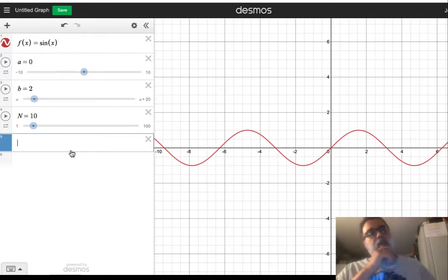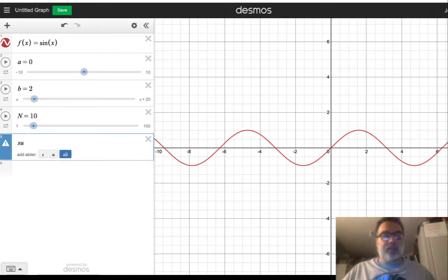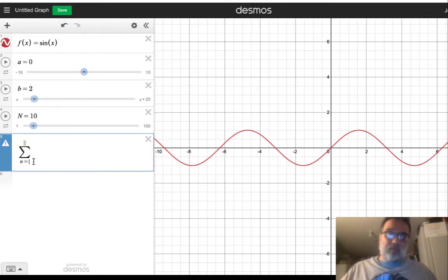You get the sigma notation in Desmos by typing sum, and we can change this variable n if we want to i, which is what you would see in more calculus books, but it's okay to leave it as n. And we want to add up those capital N rectangles. That's actually probably the best reason to change it, is because we use capital N for how many, and then we wouldn't have to specify little n or big n.